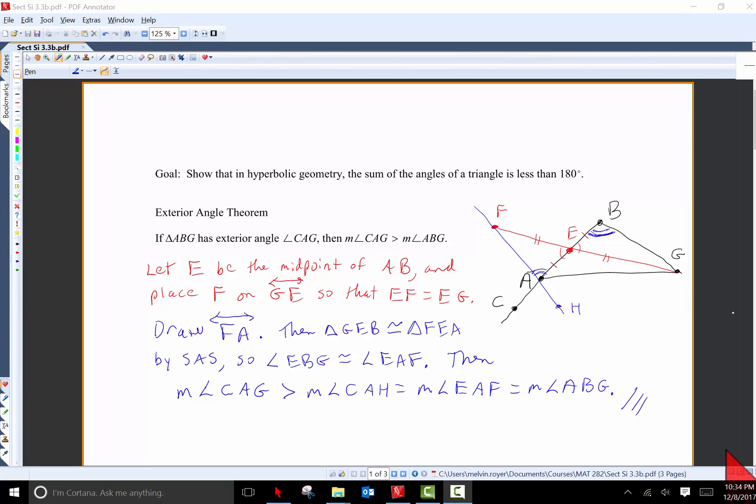This video finishes the content of the transitions course. Its purpose is to show that in hyperbolic geometry the sum of the angles of a triangle is less than 180 degrees. The results along the way will be important, but I would not ask you to memorize the proofs.